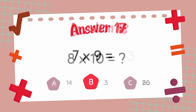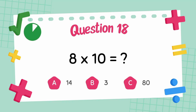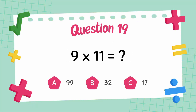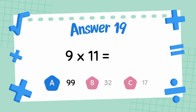What is 8 multiply 10? The answer is 80. What is 9 multiply 11? The answer is 99.